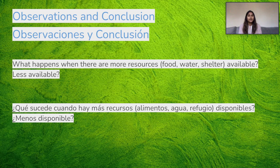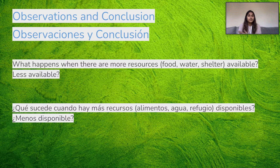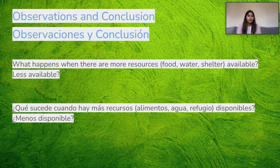Now that we're done with our diagrams, let's make some observations. What do you think happens when there are more resources available, like food, water, and shelter? And what do you think happens when there are less resources available? Take a second to pause the video and think of your answer. In any ecosystem where there are more resources, it will be easier for the organisms there to survive. For example, if there are more food, water, or shelter available for the deer, it'll be easier for them to survive. But when there are less available, it creates more competition for all the deer and it'll be less likely that they'll be able to survive.